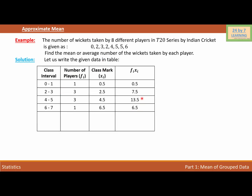This is my table, where the first column is for class interval. The second column is for number of players, which is basically frequency fi. The third column is the class mark xi, and the last column is the product of frequency and the class mark, fi×xi.